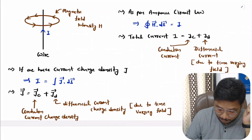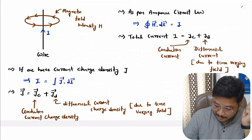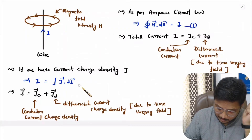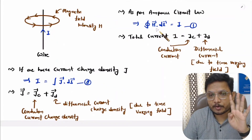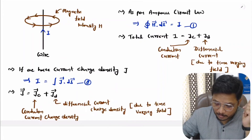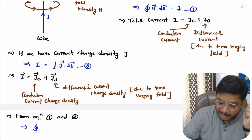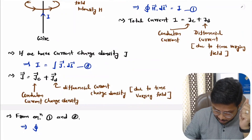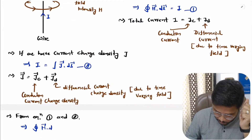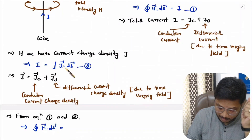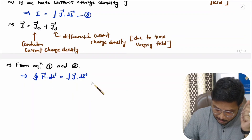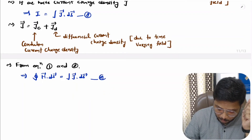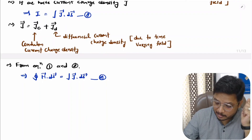Now we can compare these two equations — let us call them equation one and equation two. Based on that, we can write Maxwell's fourth equation in integral form: the line integration of magnetic field intensity H equals the surface integration of current charge density J. This is the integral form of Maxwell's fourth equation.